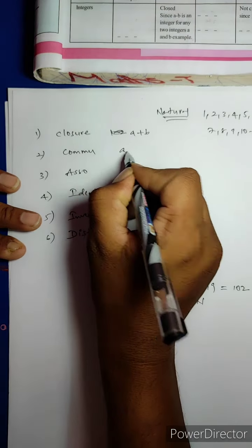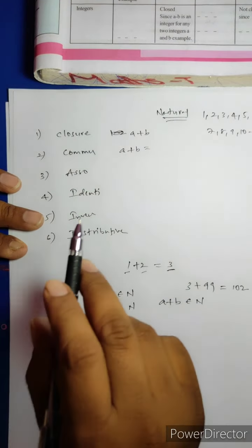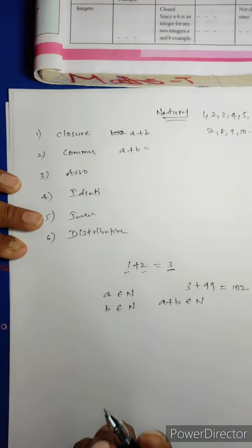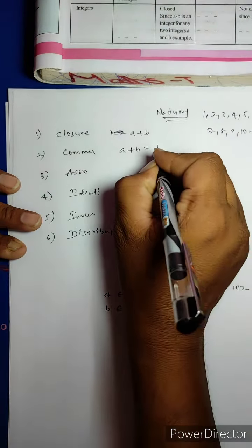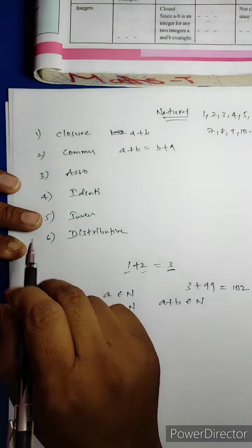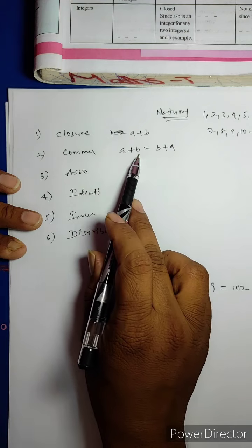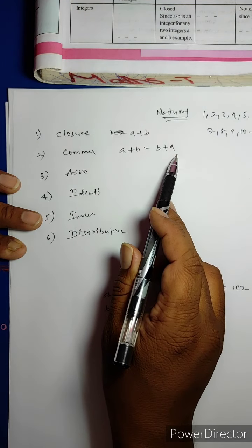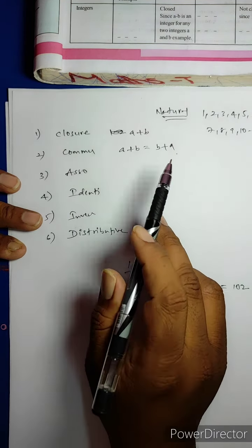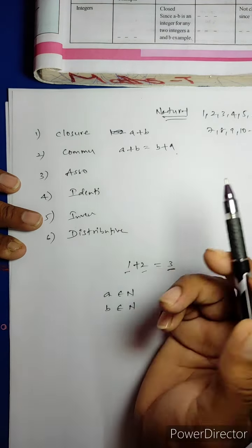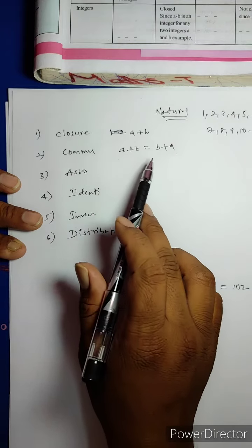Next: Commutative property. A + B: if you add 1 + 2, you get 3. If you add 2 + 1, you also get 3. So A + B = B + A. Whether you add 1 + 2 or 2 + 1, you get the same answer. When you get the same answer, we say this is under Commutative property.